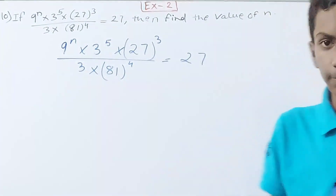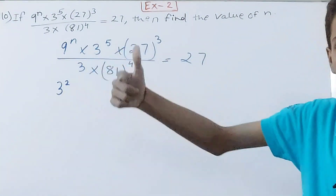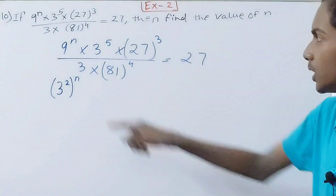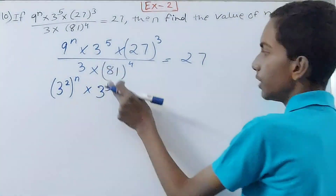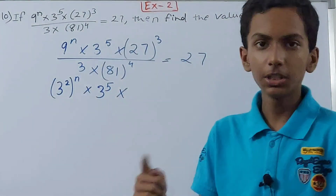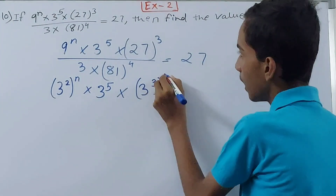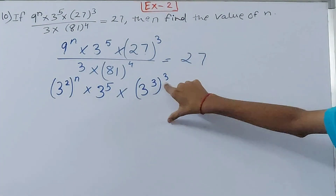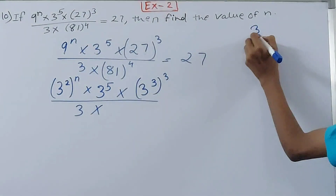So 9 can be written as 3 squared, raised to the power n — we keep that n, don't remove it — into 3 to power 5, as it is. Now 27 is 3 times 3 times 3, which is 3 cubed, so 27 cubed becomes 3 cubed, and we put that down. Then upon 3, and 81 can be written as 3 times 3 times 3 times 3, which is 3 to the power 4.